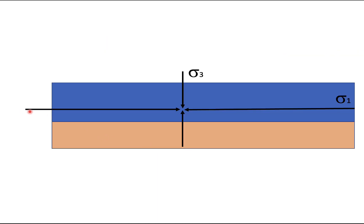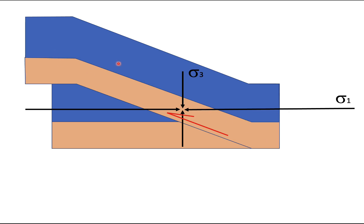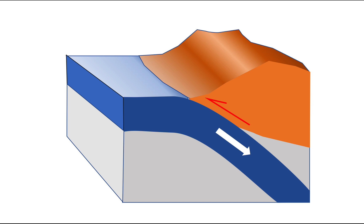So here we're compressing horizontally. Sigma 3, the least compressive stress is vertical. So you end up with a low angle fault which stacks up rocks like this. So this is a thrust fault and it happens in convergent settings where you've got plate tectonic convergence for example in subduction zones.